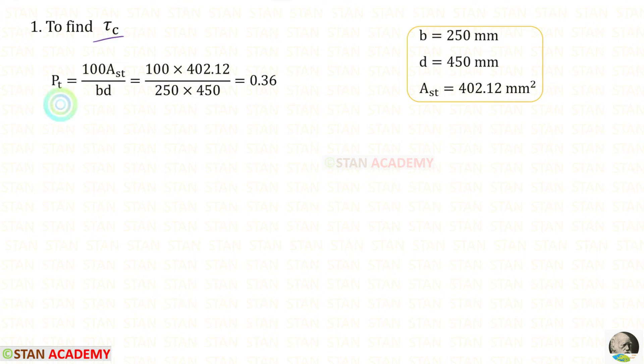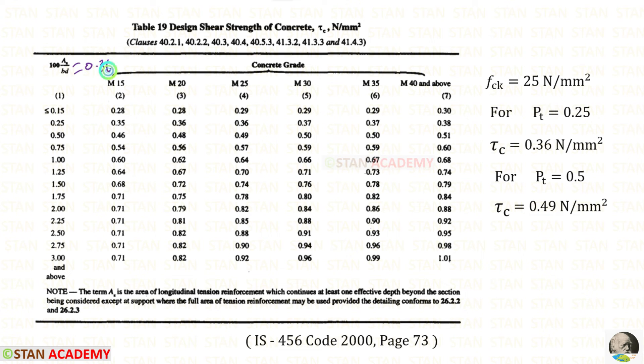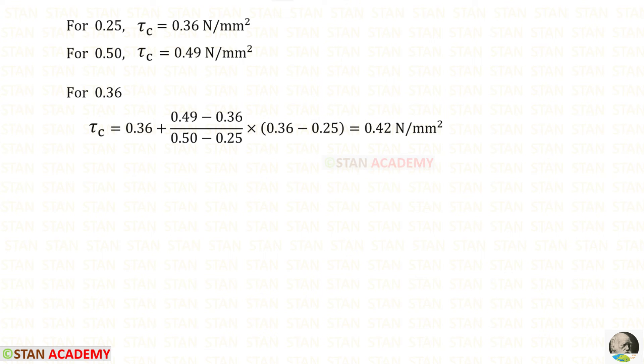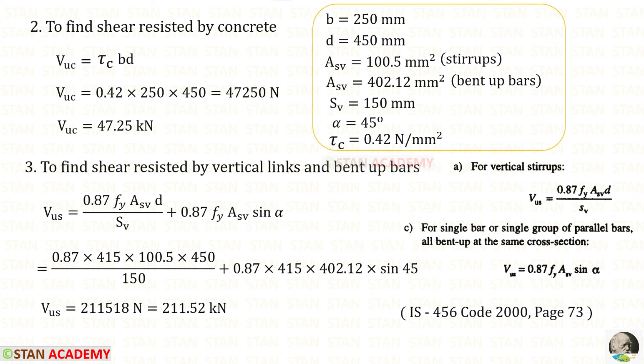To find τc, we need to find Pt. For Pt, we will get 0.36. 0.36 comes between 0.25 and 0.5. Our FCK is 25. So, we have to select these two values. By interpolation, for 0.36, we can get τc as 0.42. In the same way, we did in the previous problem, we can find VUC. For that, we will get 47.25 kN.